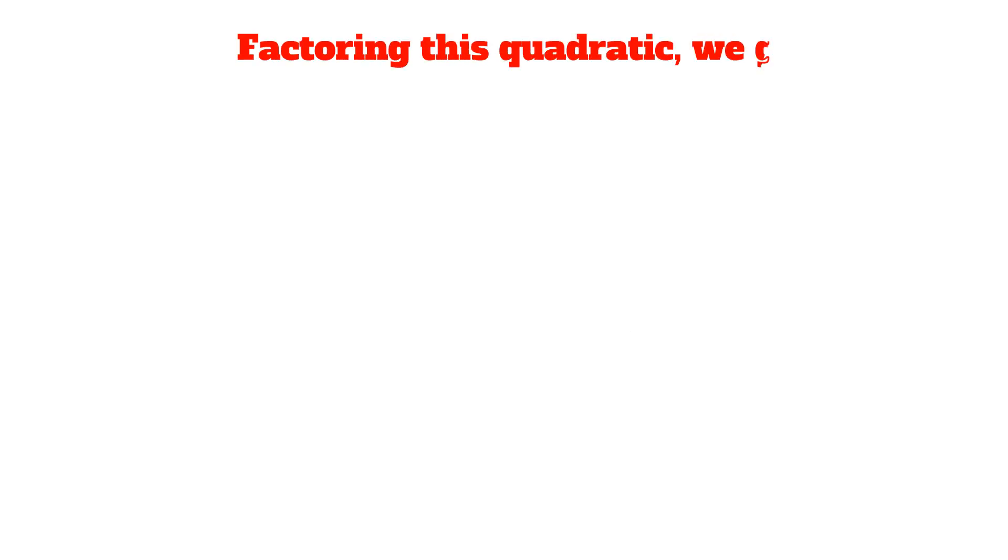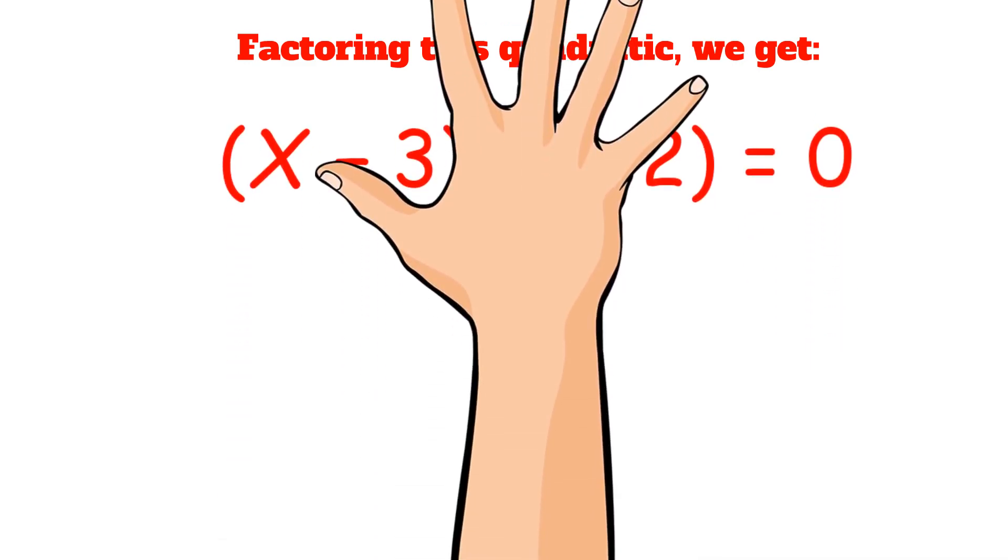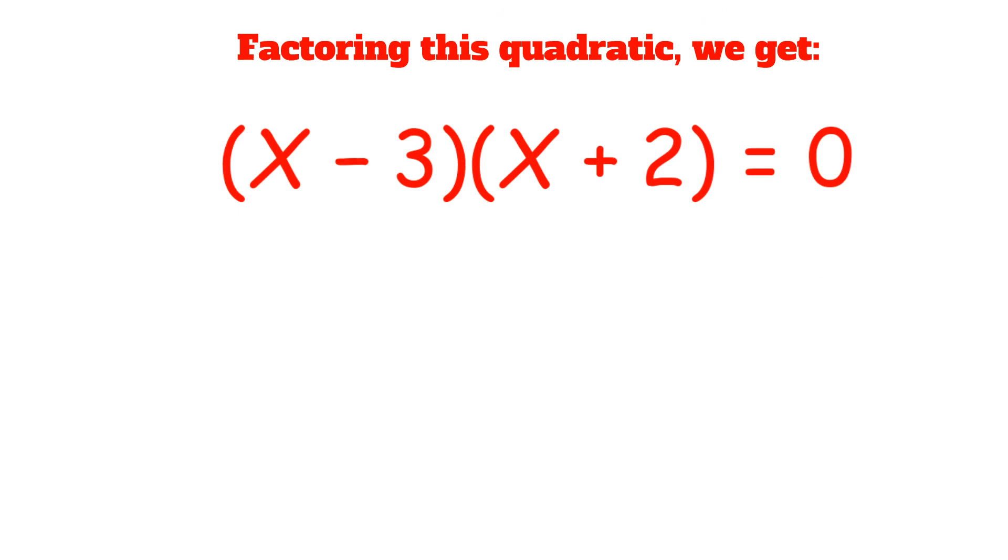Factoring this quadratic, we get x minus 3 times x plus 2 equals 0.